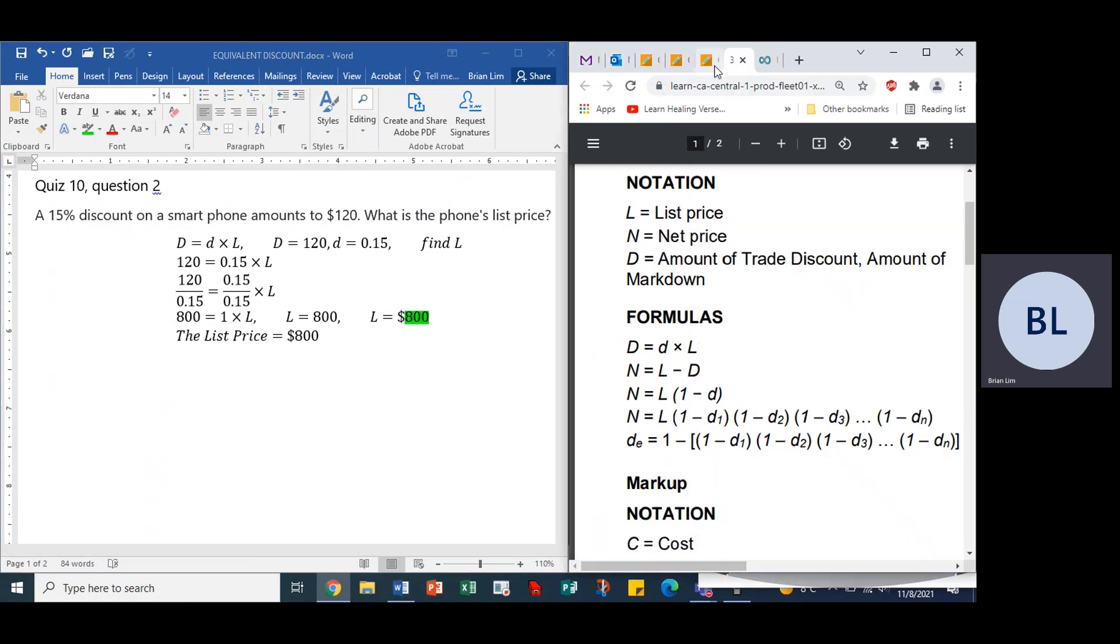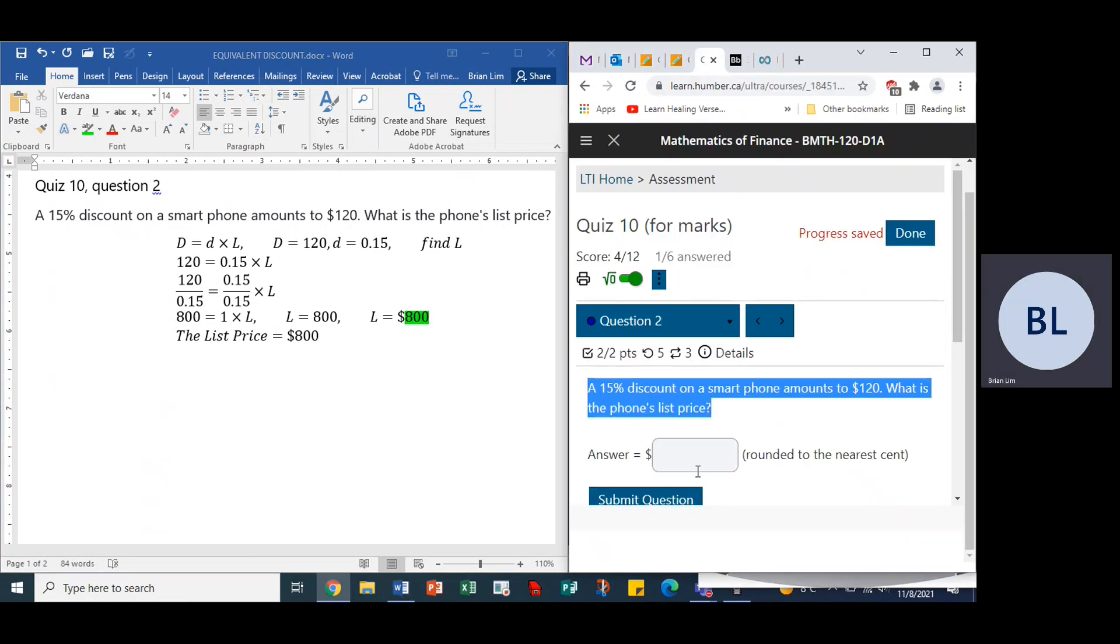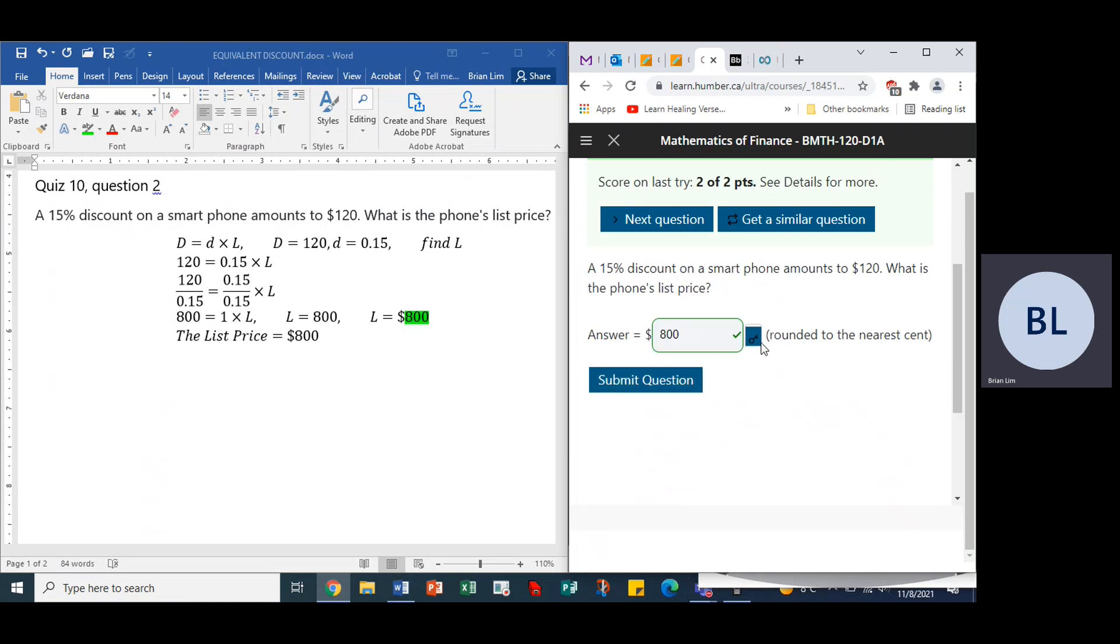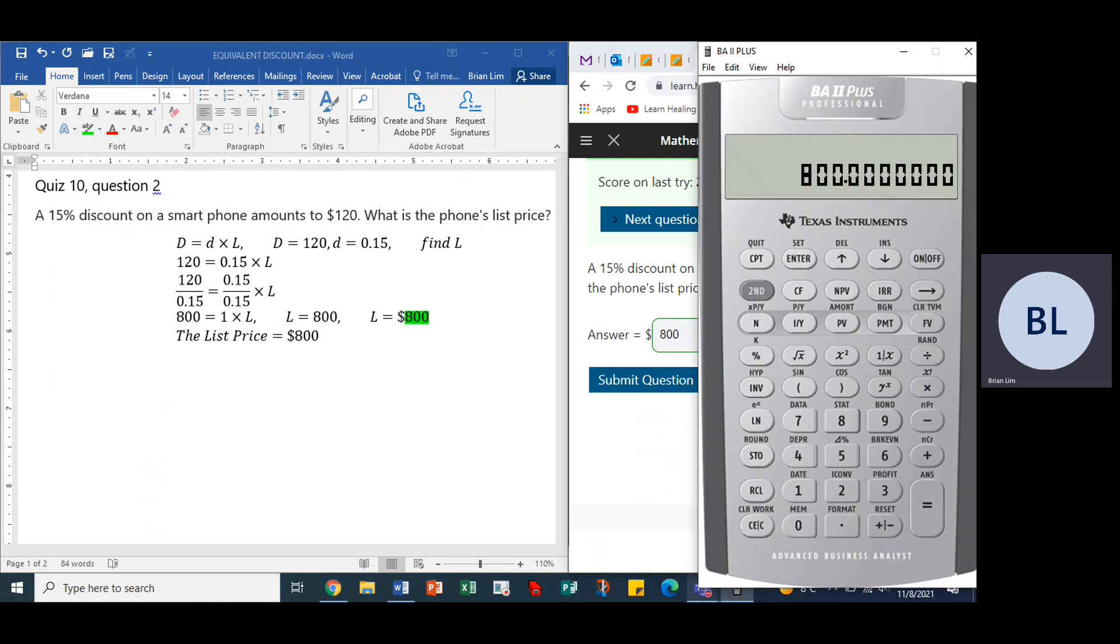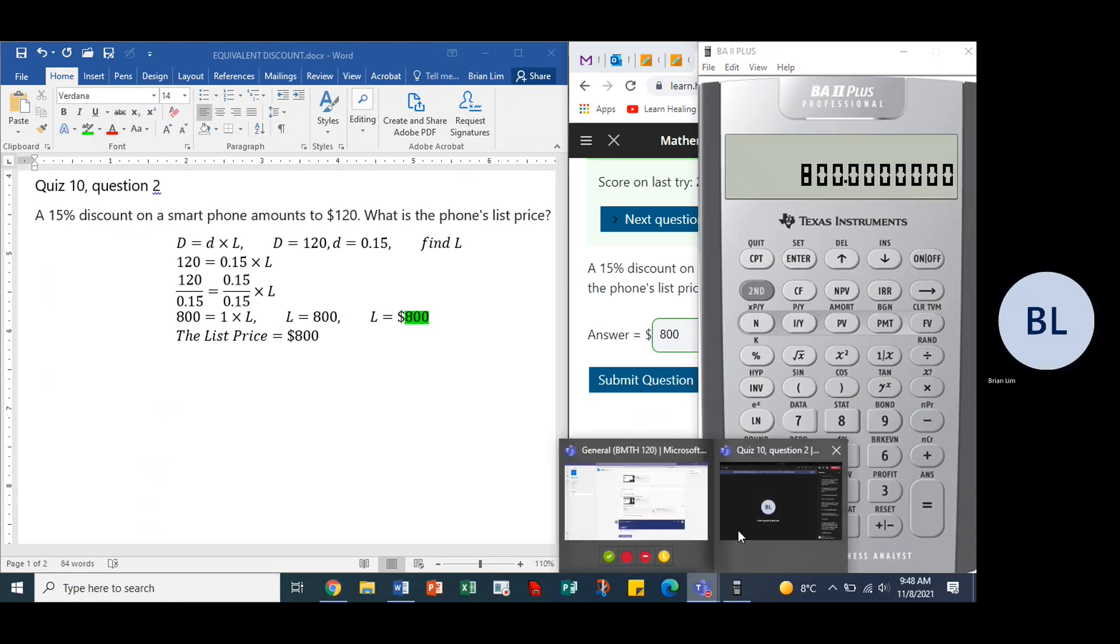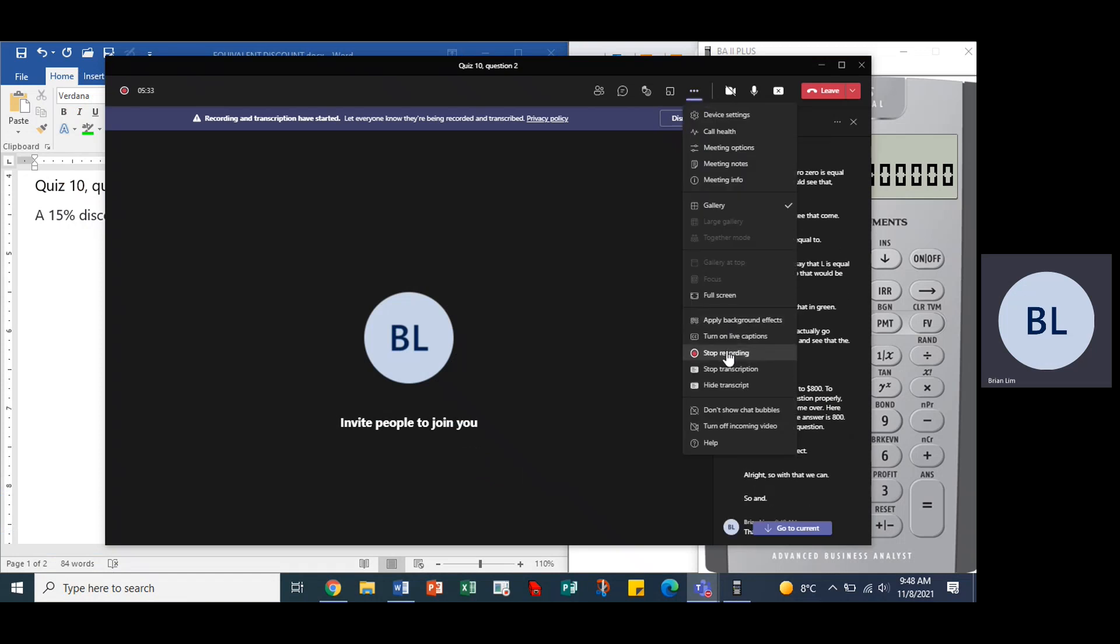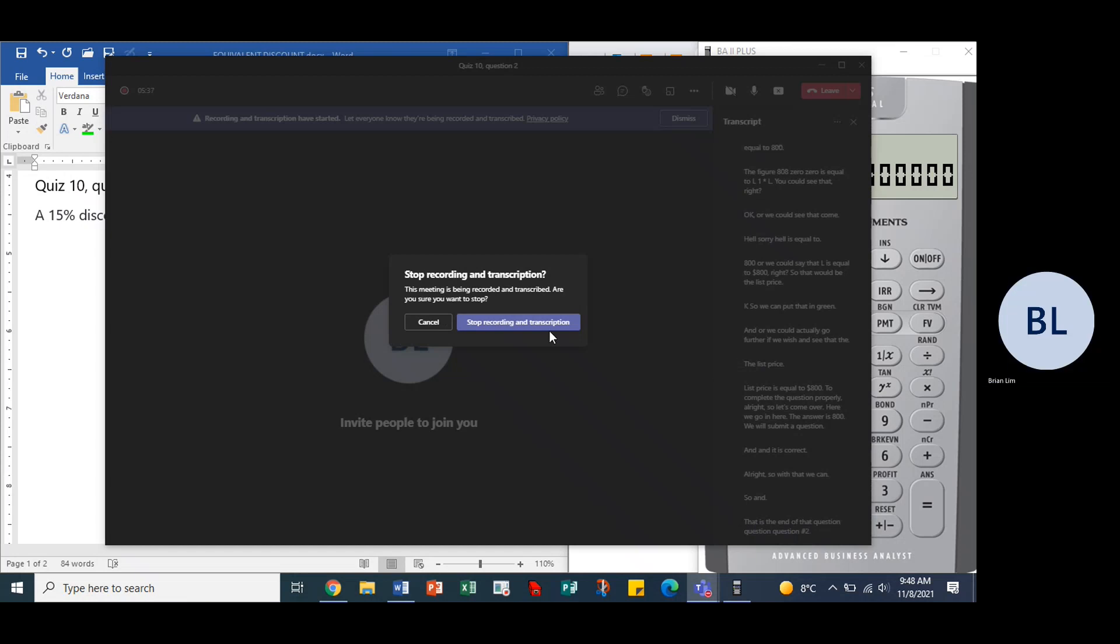All right, so let's come over here. We go in here. The answer is 800. We will submit the question and it is correct. All right, so with that we can go and that is the end of that question. Quiz 10 question number two. Thank you.